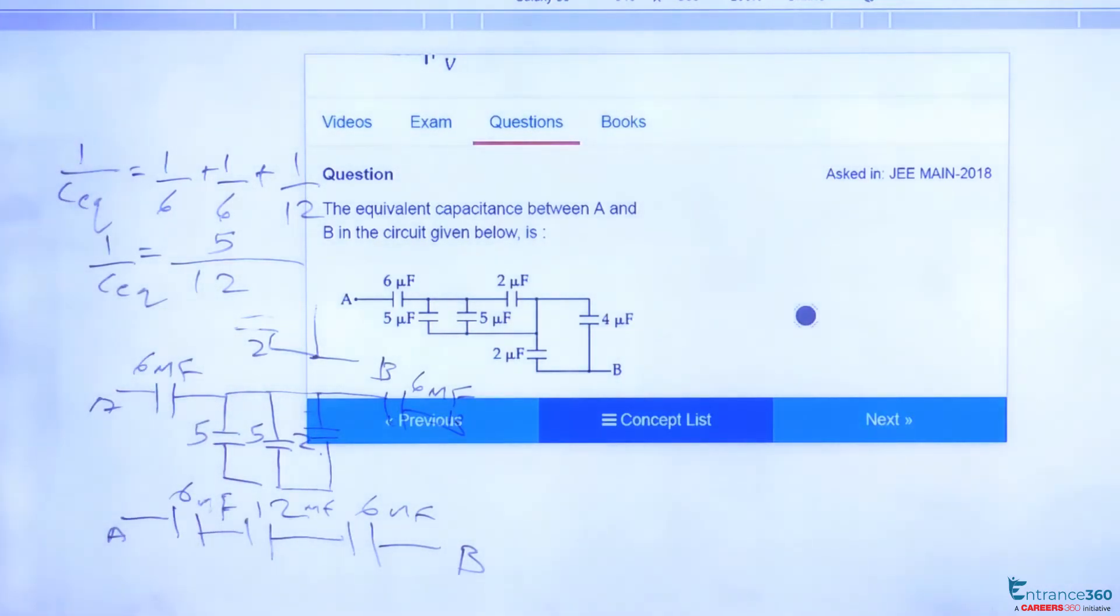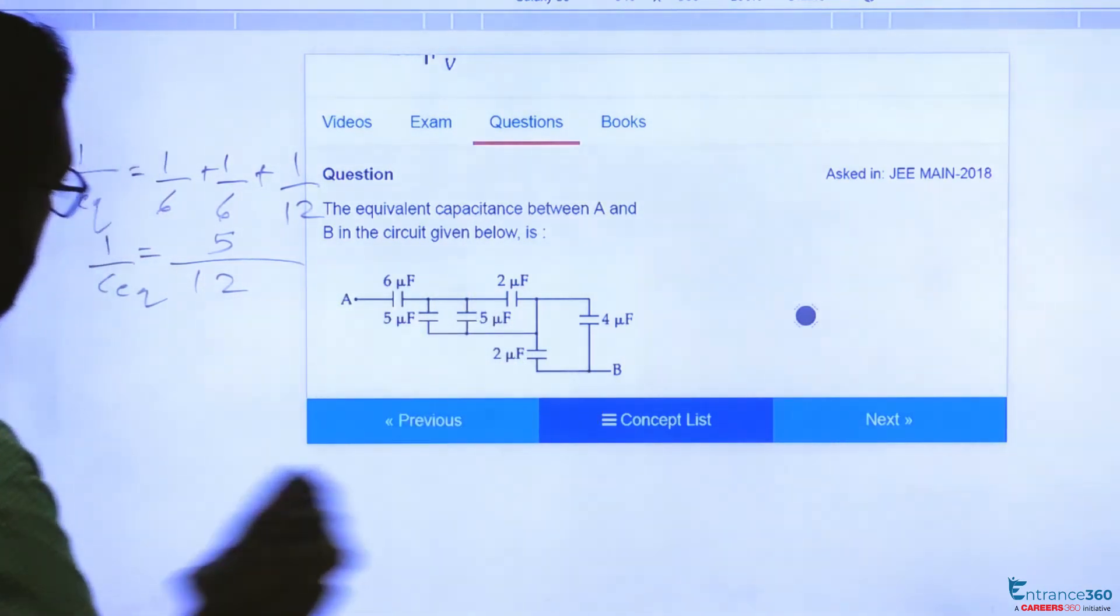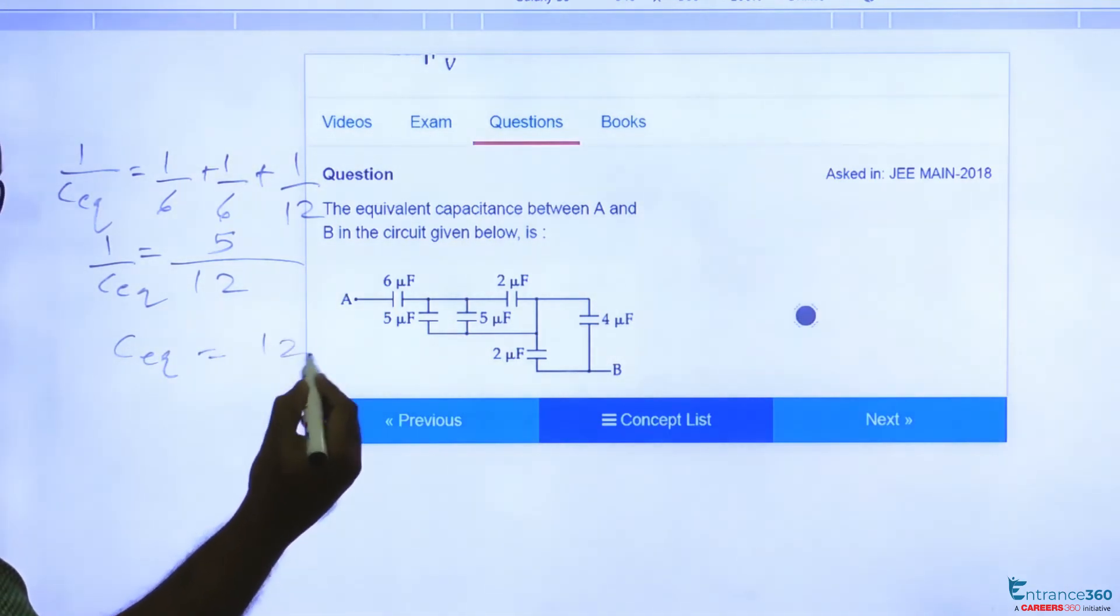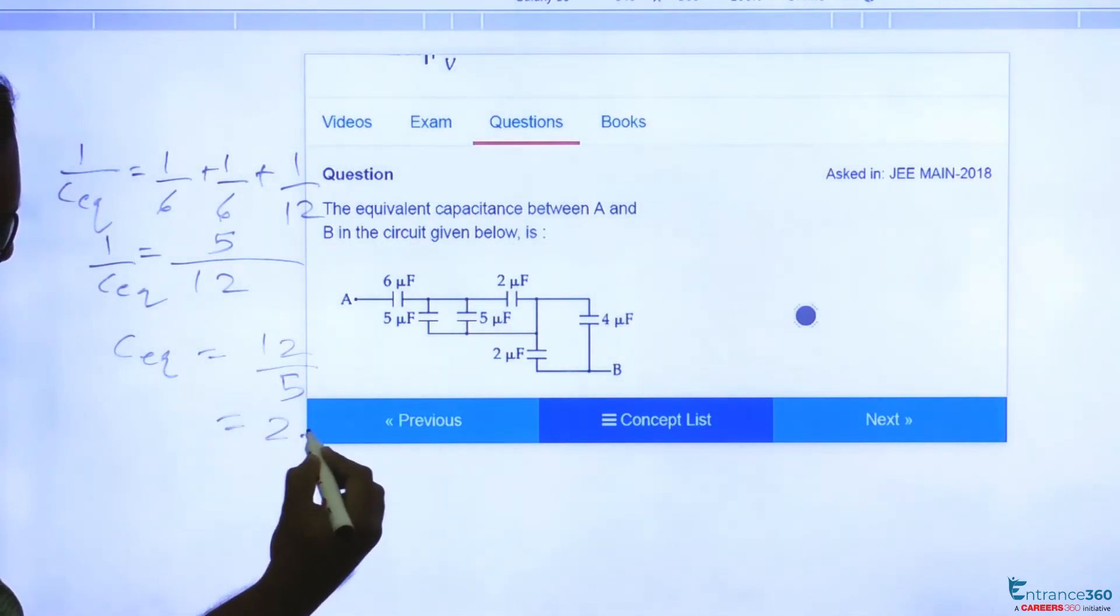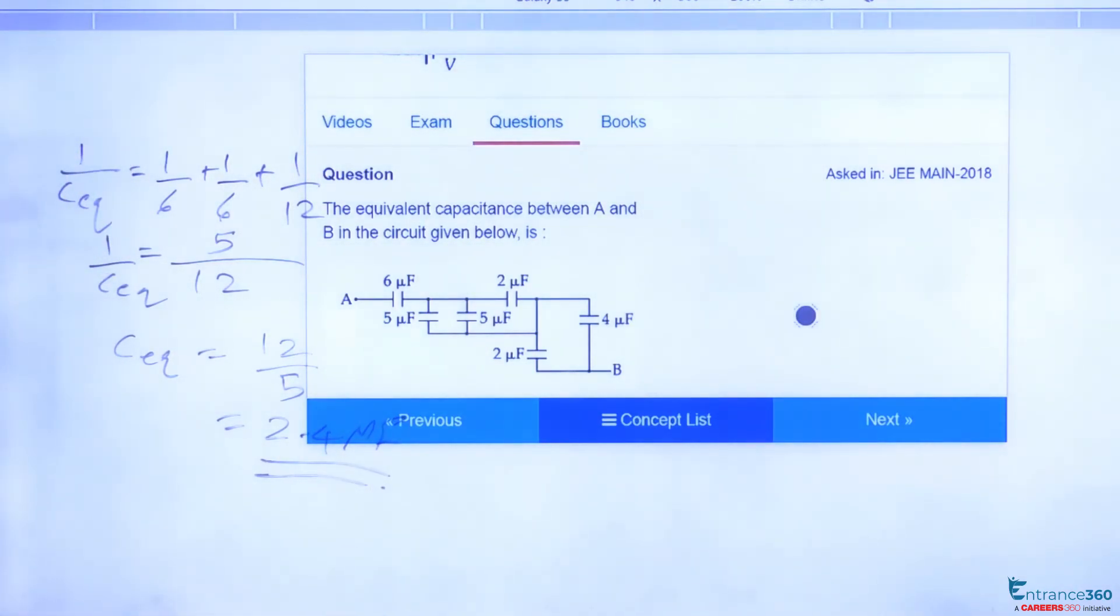And we have 5. So if we calculate C equivalent, C equivalent equals 12 by 5, which equals 2.4 microfarad. So the equivalent capacitance is 2.4 microfarad.